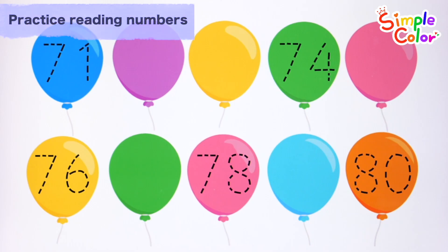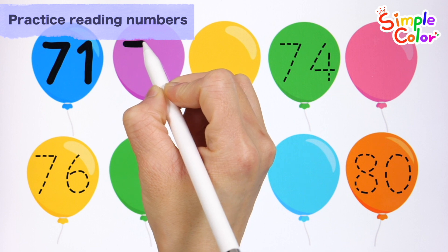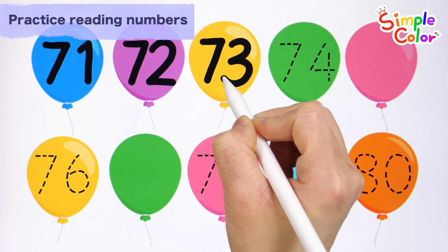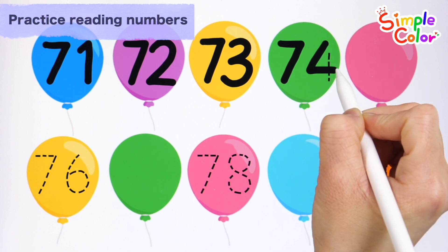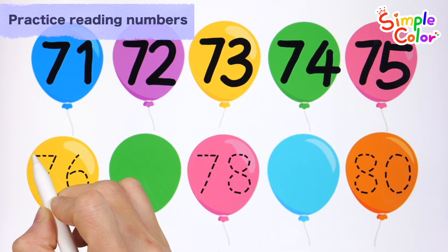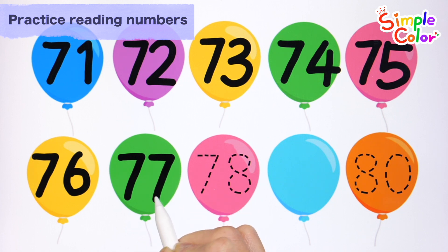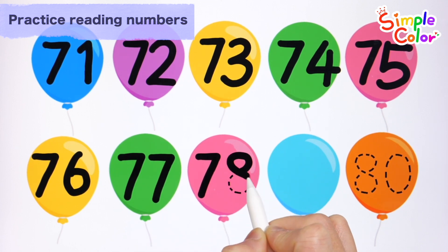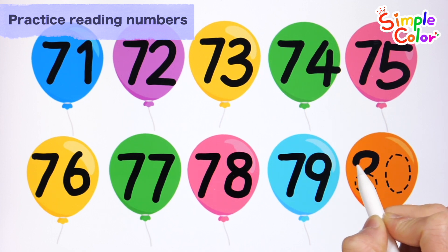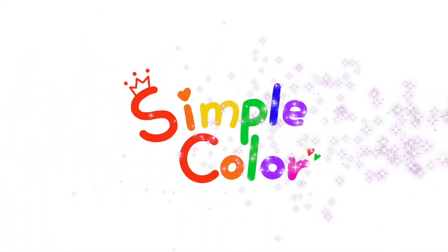Look at the numbers written on the balloons and write the numbers in the blank spaces. Seventy-five. Seventy-two. Seventy-three. Seventy-four. Seventy-five. Seventy-six. Seventy-seven. Seventy-eight. Seventy-nine. Eighty. Great job!